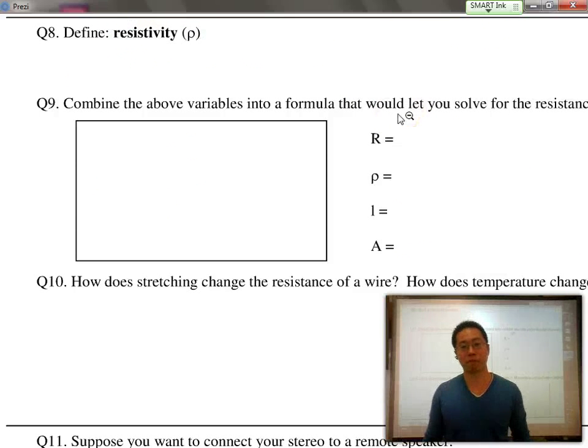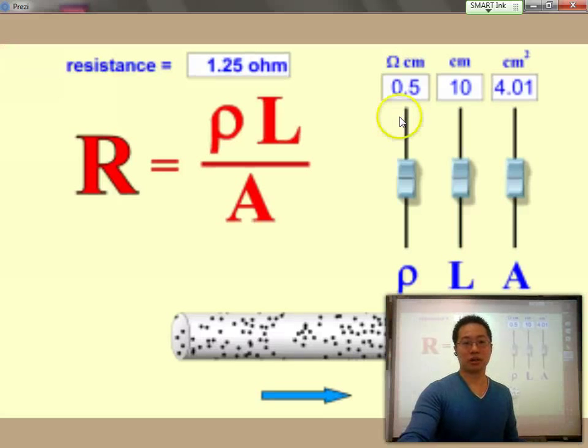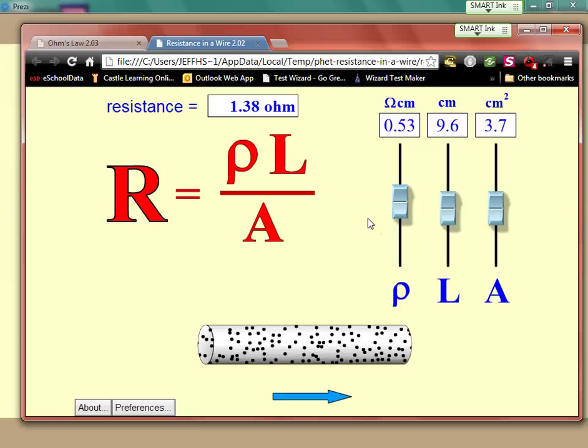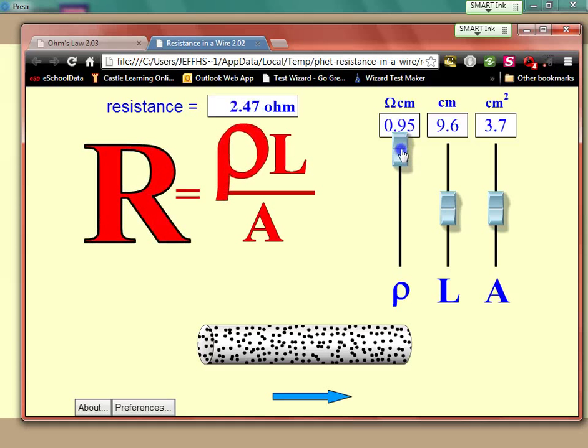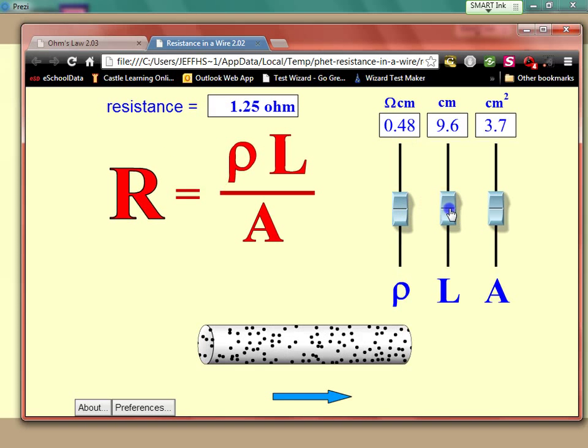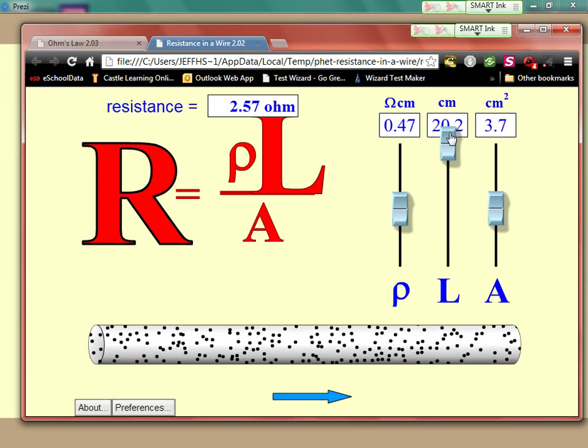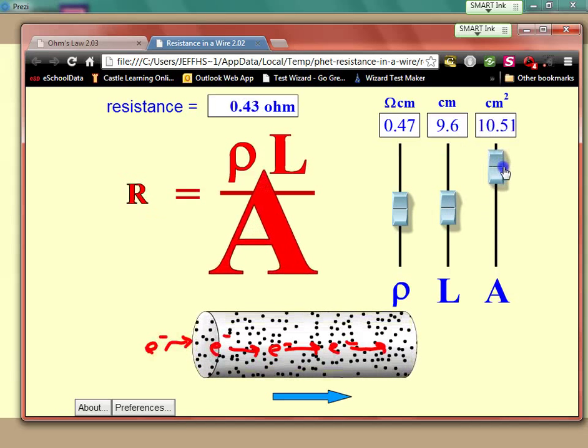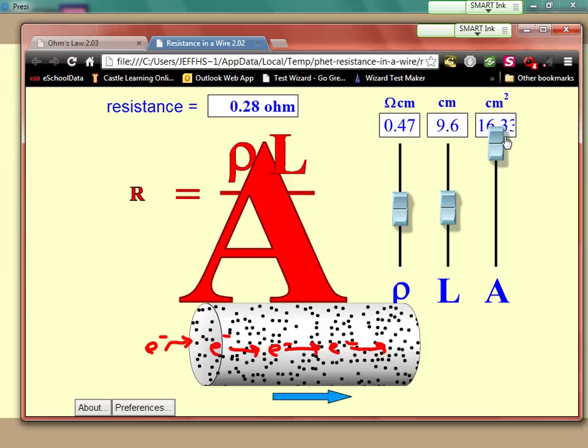We have the formula R equals rho L over A. So the most common type of problem with AP Physics is they want you to understand how do the different factors affect resistance. If I increase the resistivity, you can see that I'm increasing the resistance of the wire. If I increase the length, you can see that the electrons would normally have more protons to squeeze through as they're going by. So increasing length also increases the resistance. But if I increase the cross-sectional area, there's now more room for multiple streams of electrons to squeeze through. So the greater the area, the smaller the resistance and the more current we would produce.